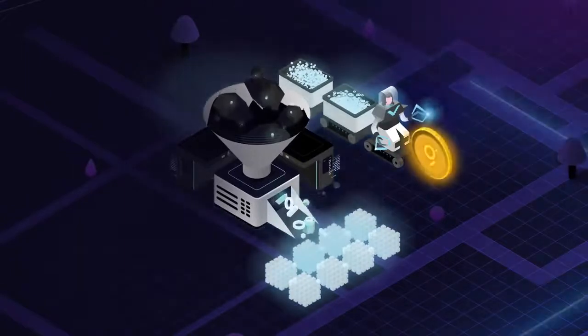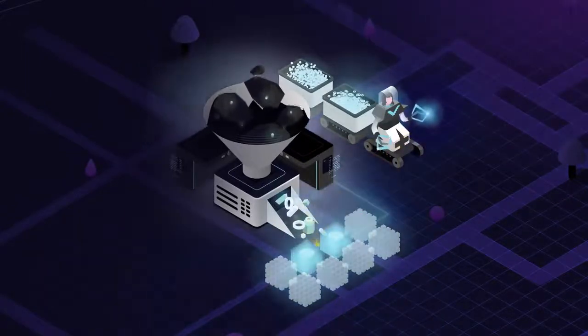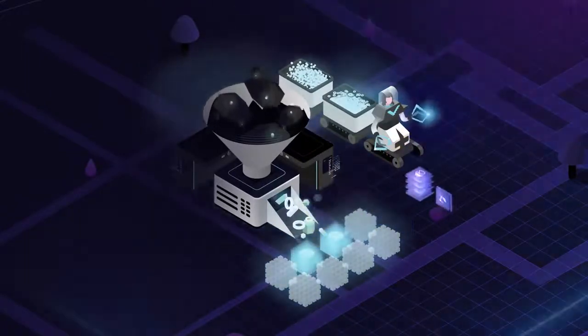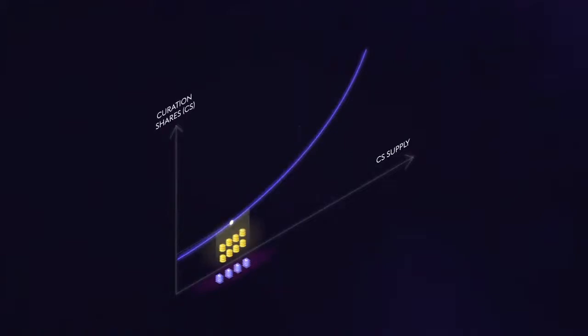Curators signal on quality subgraphs by depositing GRT, the graph's native token, in return for curation shares. Curation shares are minted on a bonding curve, which means that the earlier you signal, the more shares you get.